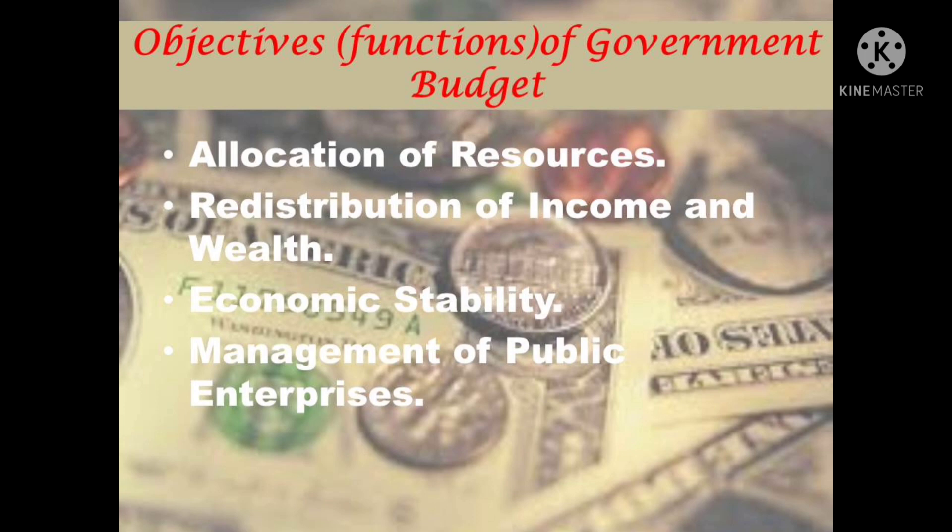Point three is economic stability. The government budget is used to prevent economic fluctuations. Economic fluctuations refer to situations of inflation or deflation. The government of a country is always committed to save the economy from periods of inflation or deflation.